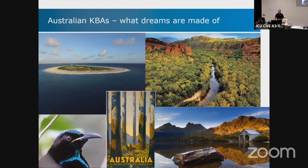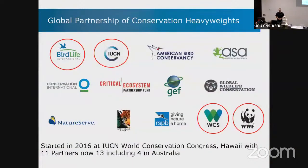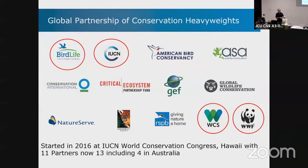So how did all this start? In 2016, key biodiversity areas started as a global partnership of conservation heavyweights — about 11 organizations — at the IUCN World Conservation Congress in Hawaii, including BirdLife International, for which BirdLife Australia is the country partner. IUCN, WCS, and WWF are all active in Australia, and other organizations have since joined as well.